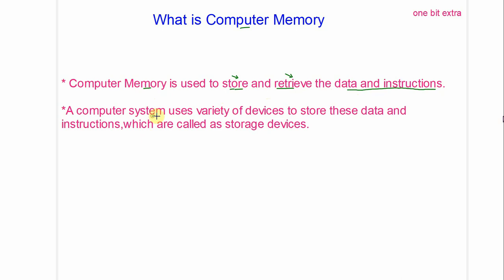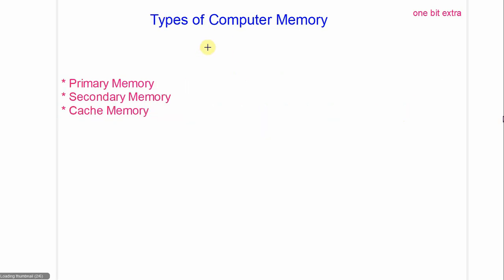A computer system uses a variety of devices to store data and instructions. These devices are called storage devices. Let's see the types of computer memory. There are three types of computer memory: primary memory, secondary memory, and cache memory.